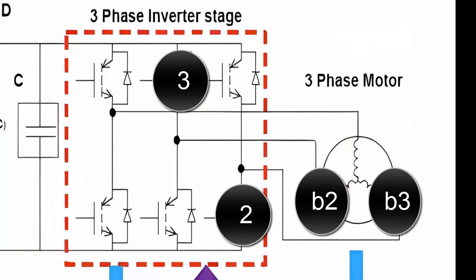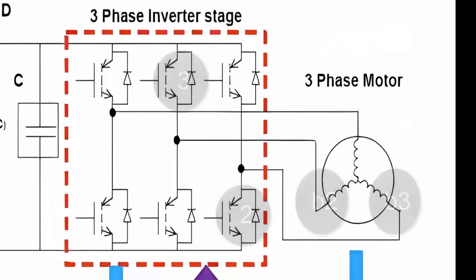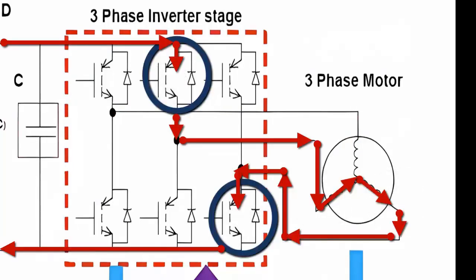Strategy 3: To allow the current flow to coil 2, the activation of transistor 3 is required. Simultaneously, transistor 2 must be activated so that the current can exit through coil 3.